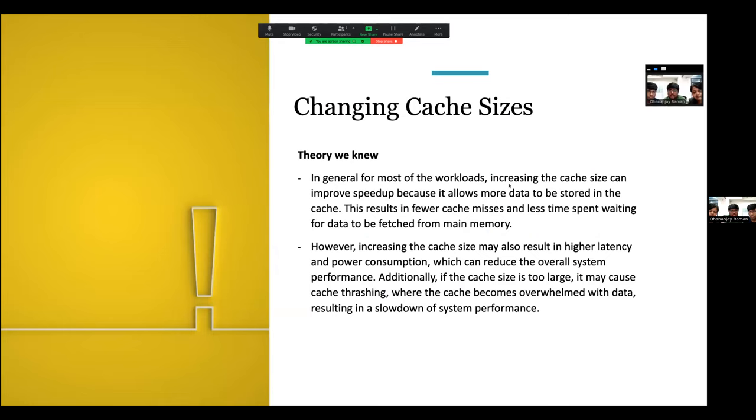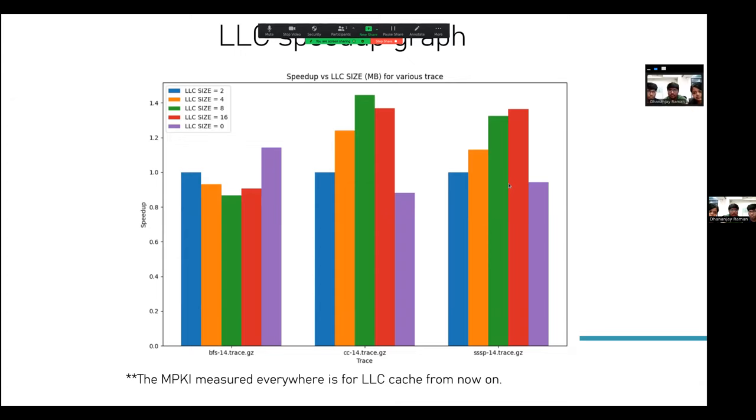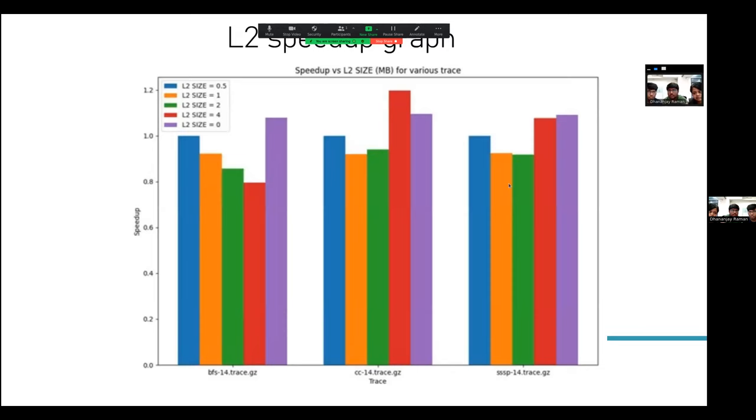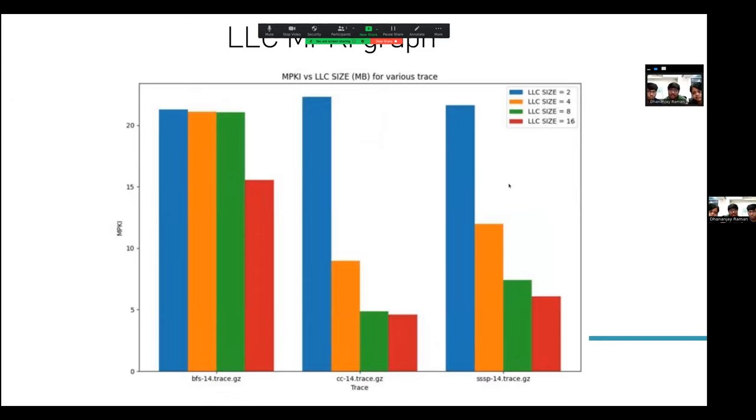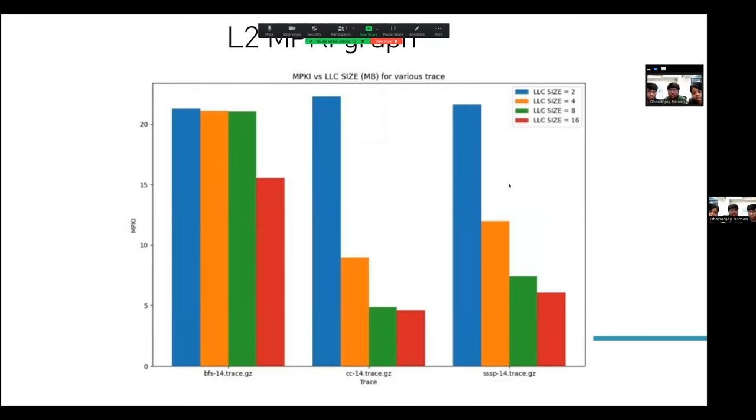So, changing the cache sizes. What we know is that in general, increasing the cache size will improve speedup, but it may also result in higher latency. And if we increase it too much, it may cause cache thrashing. Here we have plotted our results. We varied the LLC size while also changing the latency depending on the size. And then we plotted the speedup, which is just the IPC divided by the baseline IPC. And then we did this for all the L2 and LLC. This is the LLC speedup and this is the L2 speedup. And this is the MPKI. MPKI is basically the L3 MPKI and this is the L2 MPKI.